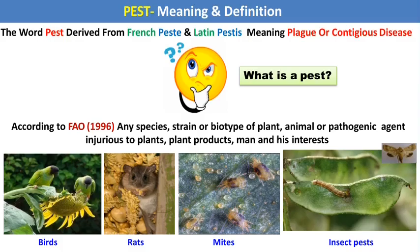Hi friends. This is Professor Ace Mochi, Department of Agriculture and Entomology, KKWA College of Agriculture, Naasic. Today I will teach you the most important concept of your syllabus: categories of pests and outbreaks of the pest.